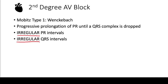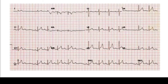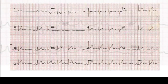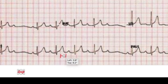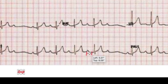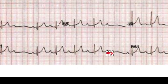Looking at this example, starting with the second beat, the first PR interval is shorter than the next, and each subsequent PR interval is progressively longer, until on the fifth beat you have a dropped beat. Measuring the QRS complexes confirms they are also not at regular intervals, consistent with Wenckebach block.